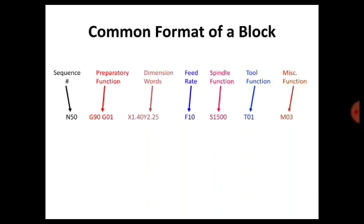The next one is miscellaneous function, also known as M codes. M codes are used for controlling machine actions. For example, to turn on the coolant you use an M code, and to rotate the spindle in clockwise or anti-clockwise direction you also use an M code. M03 stands for miscellaneous function code 03, which means the spindle will rotate in the clockwise direction. So S1500 M03 means the spindle will rotate clockwise at 1500 RPM.